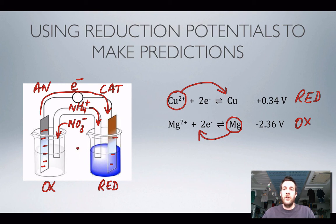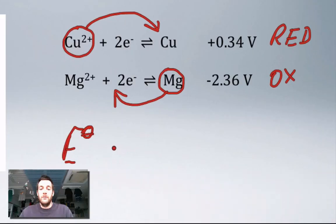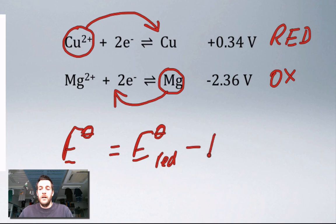We've now used the reduction potentials to determine the anode, cathode, direction of electron flow, direction of ion flow, and where oxidation and reduction take place. We can even say what we'd observe at the electrodes: the copper solution will start to fade as copper ions turn into copper atoms, and we'll get a deposit of copper on the electrode. Meanwhile the magnesium electrode will start to dissolve, and the magnesium ion solution won't change colour because magnesium ions are colourless.